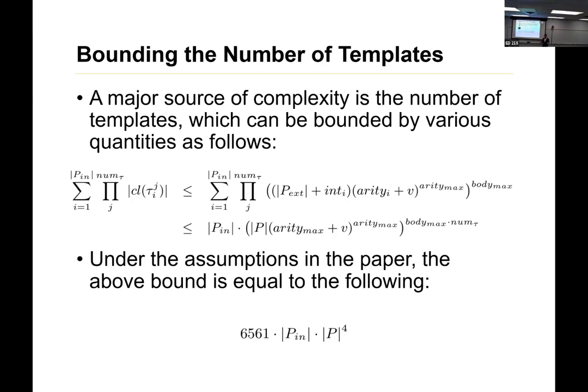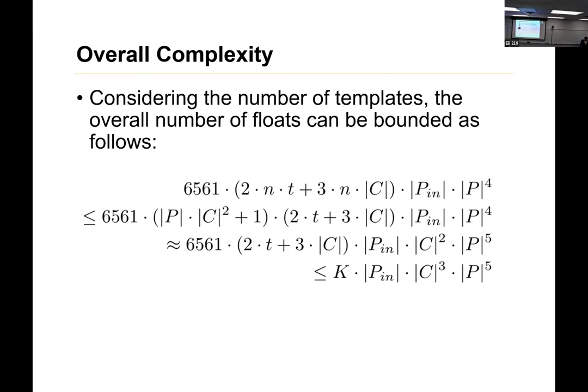But for purpose of complexity analysis, let's just assume everything's kind of the same. Well, now that guy goes into the exponent. And so, if you use the assumptions from the paper, you get a big constant times the intentional predicates times |P| to the fourth, which is a kind of big bound.